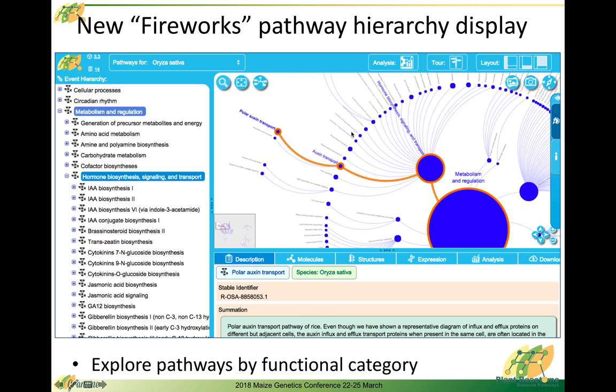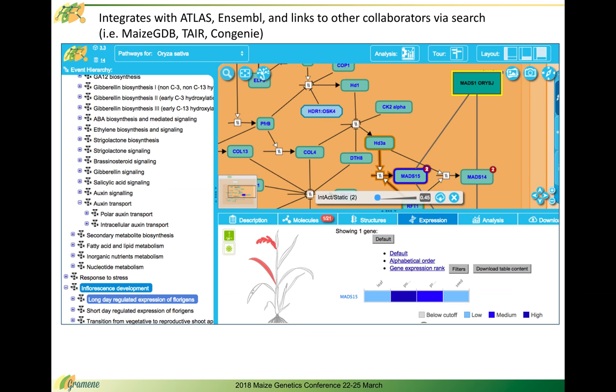This is a top-level fireworks hierarchy view of various pathways. Another example is a detailed pathway view of a genetic regulatory pathway that is involved in inflorescence development. You can see we also have metabolic pathways, hormone signaling pathways, transport pathways as well.